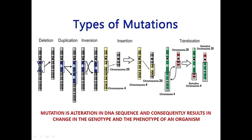This is the inversion — a segment of the chromosome is inverted. This is the insertion. For example, chromosome 4 and chromosome 20 are shown here. You can see how a part of the chromosome gene is involved in these changes.